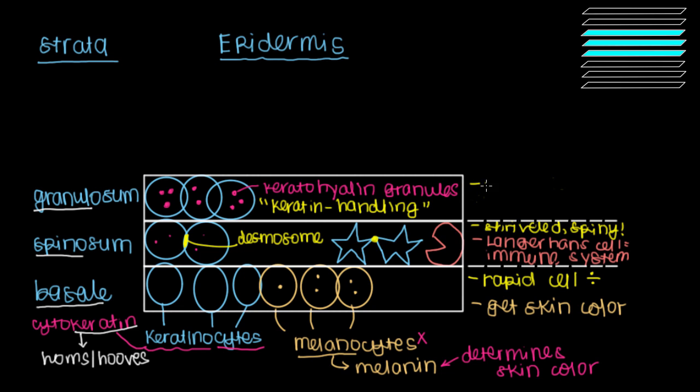The other thing the stratum granulosum does is that it releases these things that are called lamellar bodies. And these lamellar bodies contain a whole bunch of lipids that then come together and form a strong lipid layer that sits at the top of our skin. This lipid layer is impermeable. It gives the skin its watertight capabilities that prevent foreign pathogens from making their way down deeper into our skin and eventually into our bloodstream.